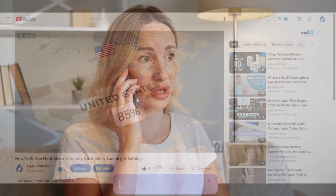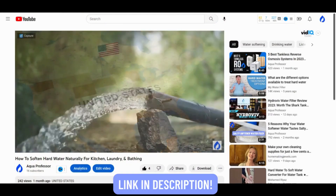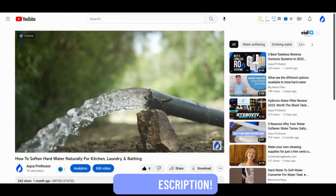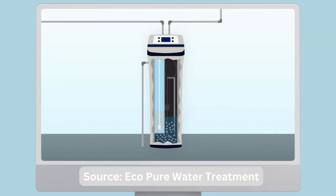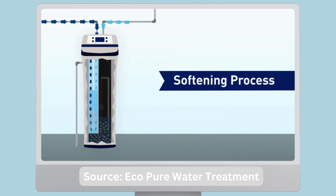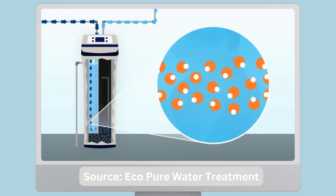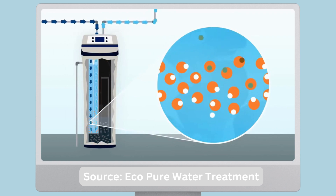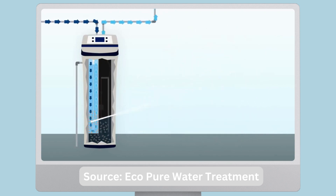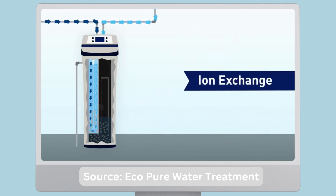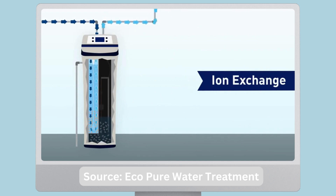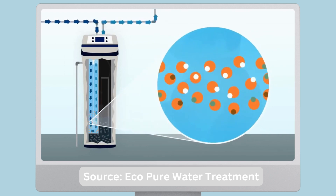We've discussed this in our earlier video, so check that out for more details. Here's where water softeners kick in. They use a process known as ion exchange to replace hard water ions with sodium ions. Hard water enters a mineral tank containing negatively charged sodium ions. They attract positively charged calcium and magnesium ions and remove them from the water. In the process, they release sodium ions, and the output is softened water — perfect for household chores.